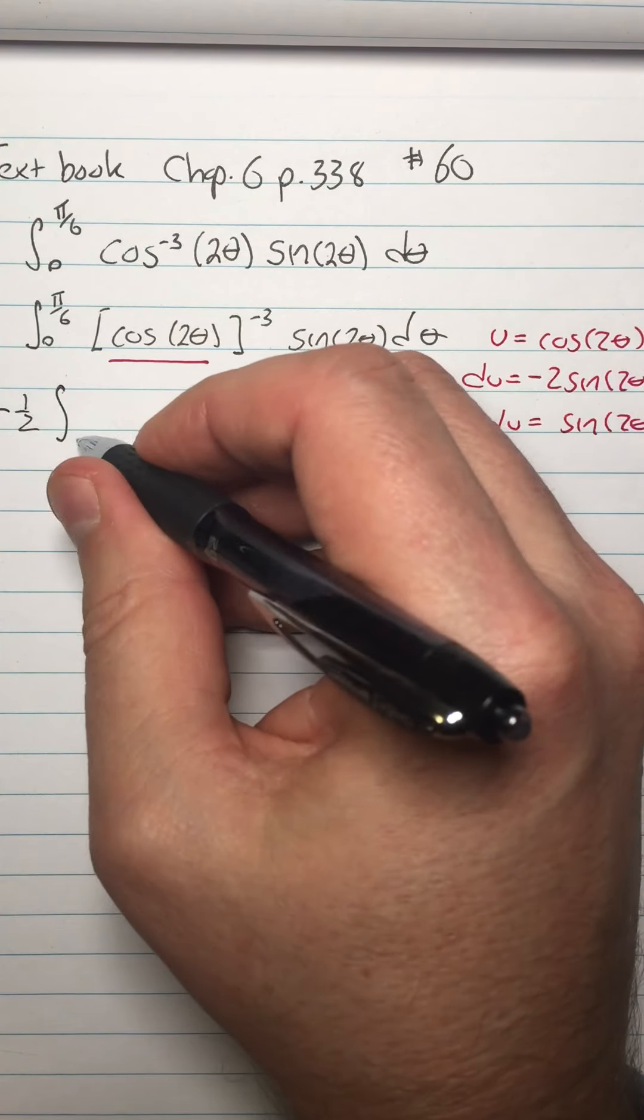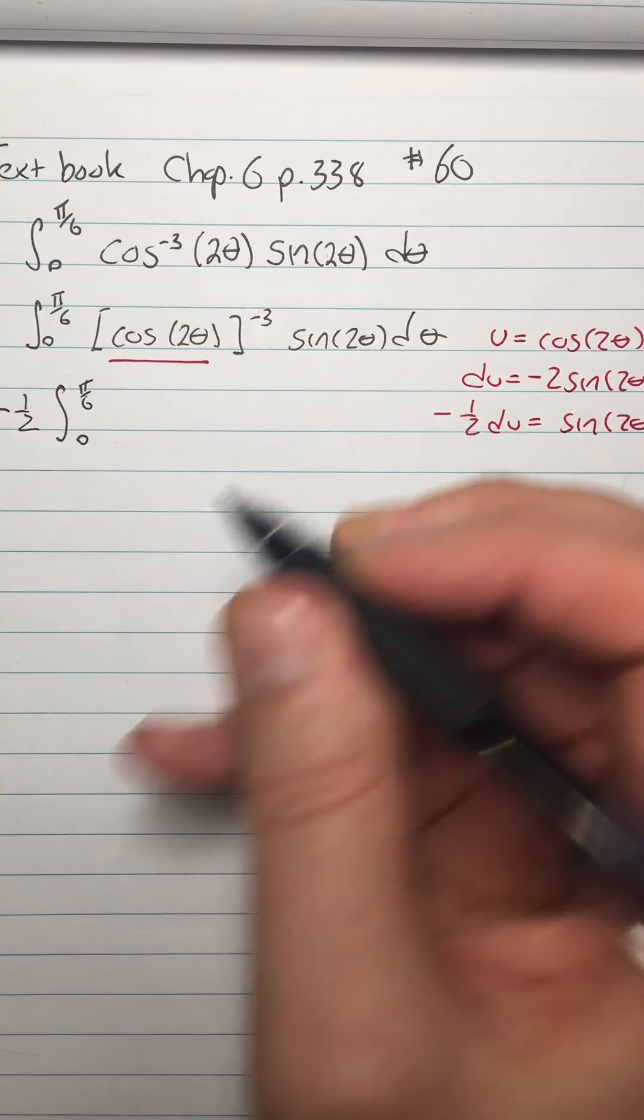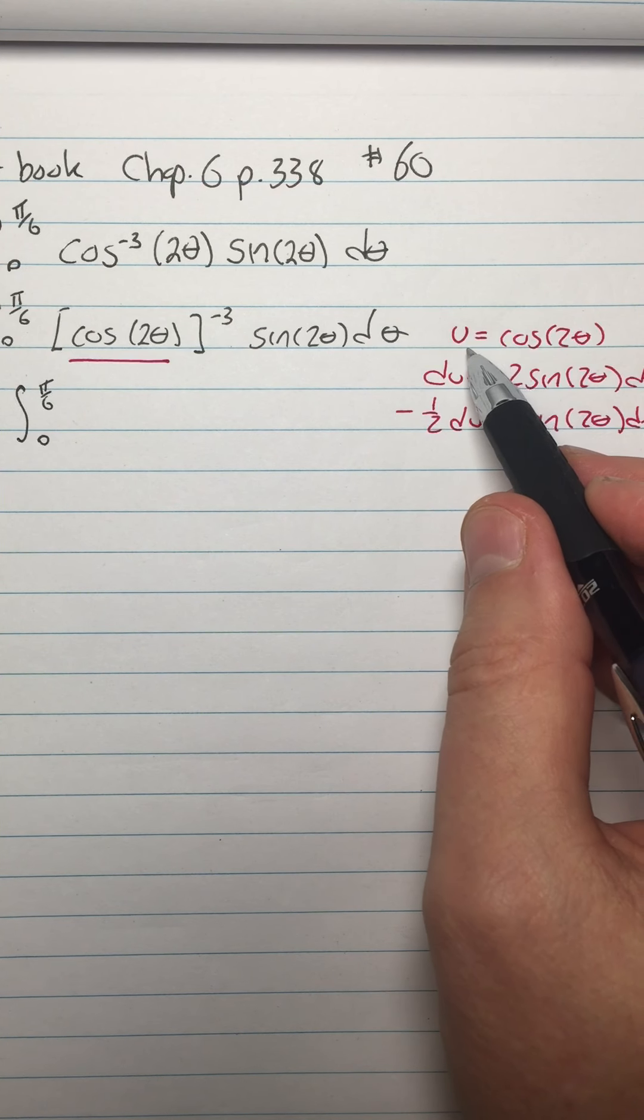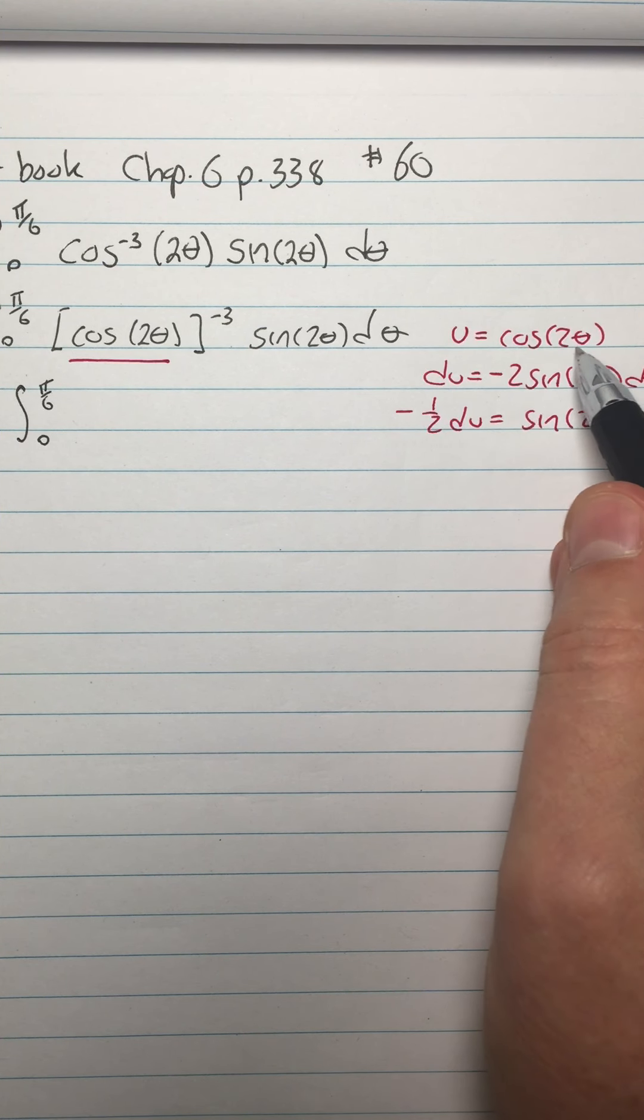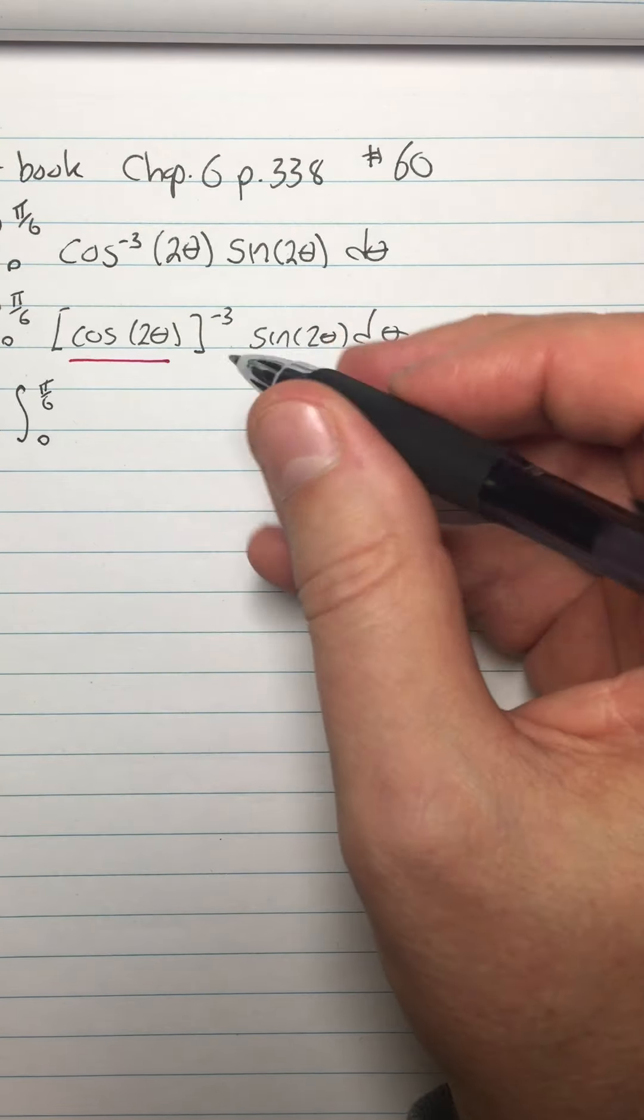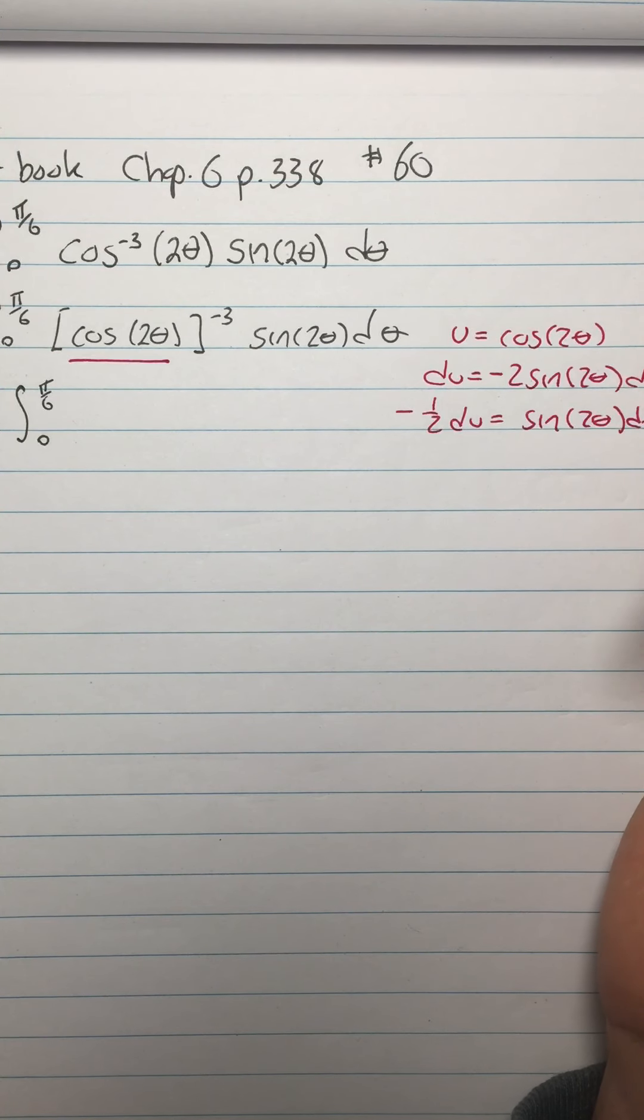So I'm going to keep 0 to pi over 6, of course. The alternative way to do this is to change these limits using this over here. So I would have my limits go from cosine of 0 to cosine of pi over 3. Just change the limits here and then you don't have to sub in the u at the end. I don't like to do it that way, but that's a matter of style.